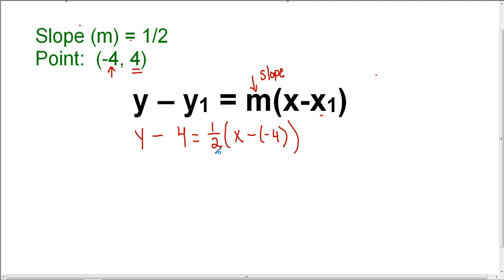And now I can just go ahead and start by simplifying this equation. So I'm going to start on the right-hand side by distributing the 1 half throughout the parenthesis. But before I even do that, I'm actually going to simplify a little bit in the parenthesis, because we have x minus negative 4, which can also be written as x plus 4. I think it's a little easier to see it as x plus 4 than x minus negative 4.